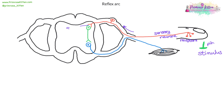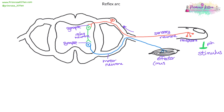The message would move across a gap called the synapse to the relay neuron. The message would then move across another synapse to a motor neuron. The motor neuron would then allow the impulse to travel through to an effector. An effector creates the response, and an effector is almost always a muscle or a gland.